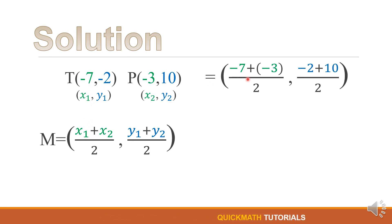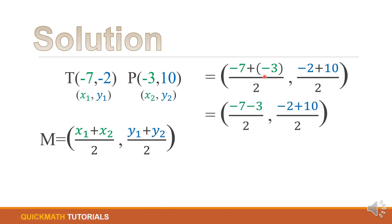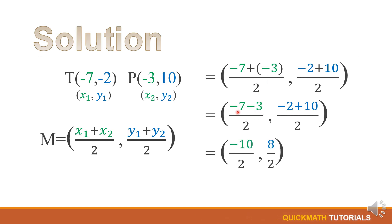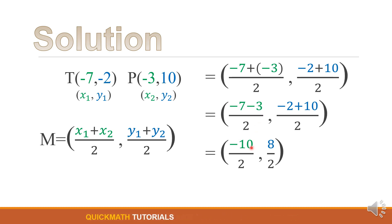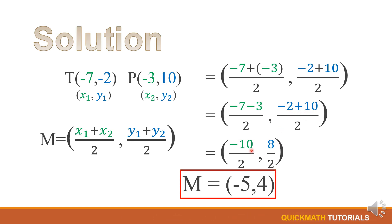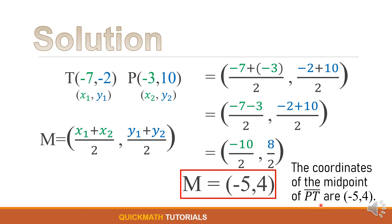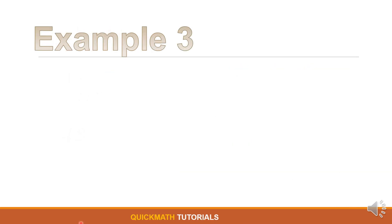x sub 1 is equal to negative 7 plus our x sub 2 is equal to negative 3, y sub 1 is equal to negative 2, and y sub 2 is equal to 10. For negative 7 and negative 3, since they have the same sign, we will add: 7 plus 3 is equal to 10, then copy the sign — negative. For negative 2 and positive 10, since they have different signs, we will subtract: 10 minus 2 is equal to 8. Negative 10 divided by 2 is equal to negative 5, and 8 divided by 2 is equal to 4. Therefore, the coordinates of the midpoint of the line segment PT are negative 5 and 4.